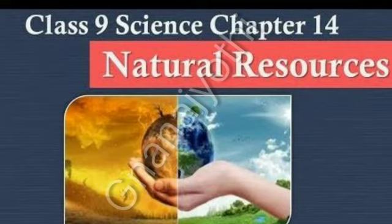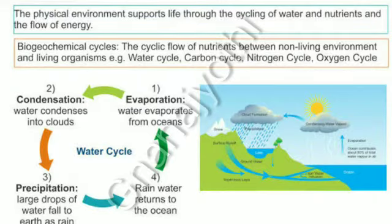Chapter 14 Natural Resources Part 2: Biogeochemical Cycles. The physical environment supports life through the cycling of water and nutrients and the flow of energy. The cyclic flow of nutrients between the non-living environment and living organisms is called biogeochemical cycles. There are four types of cycles: water cycle, carbon cycle, nitrogen cycle, and oxygen cycle.